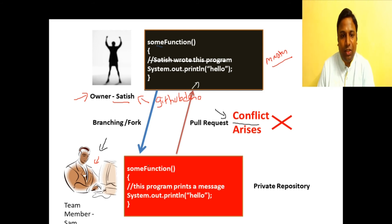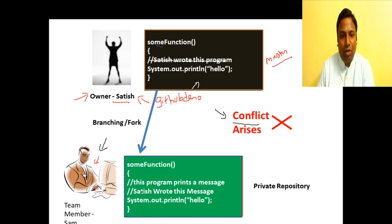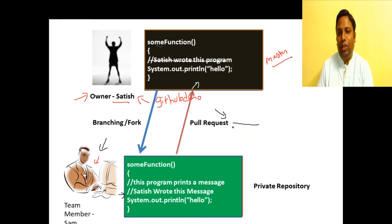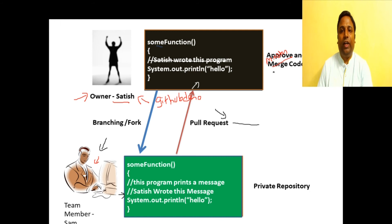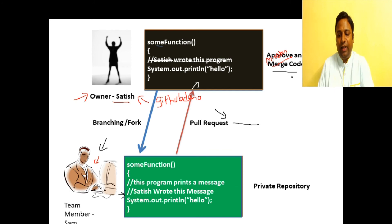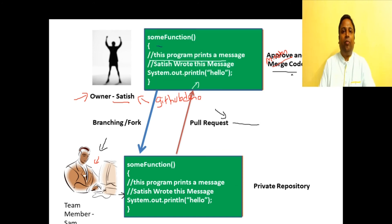To resolve the conflict, Sam must manually go through the code already in the main repository. He sees there is one comment line missing in his version. He manually updates his code to also include Satish's changes. Once there is no conflict, he raises the pull request again. Satish reviews, approves, and issues a merge — the changes are finally merged into the main repository.